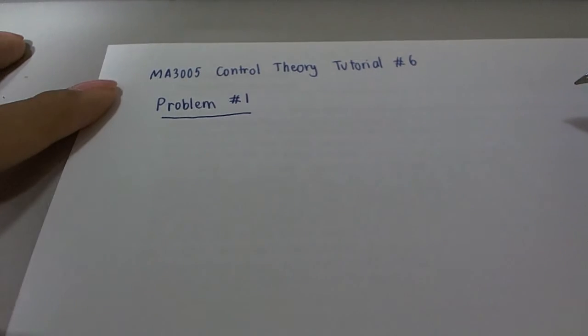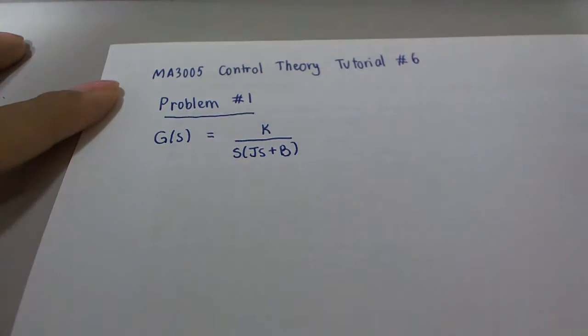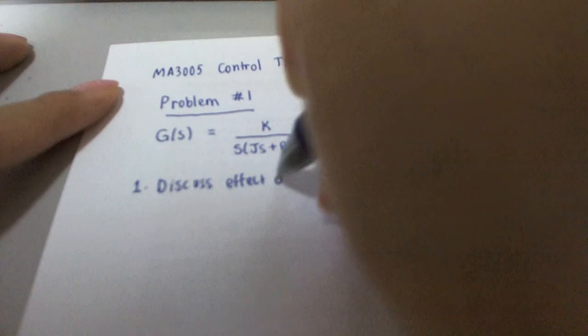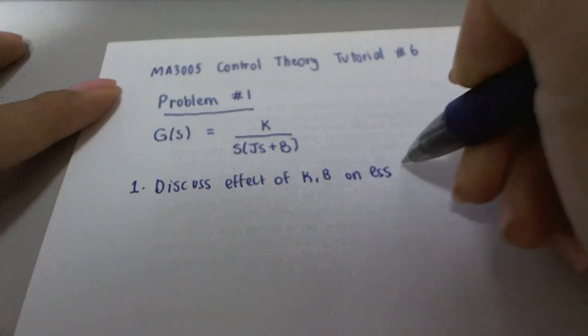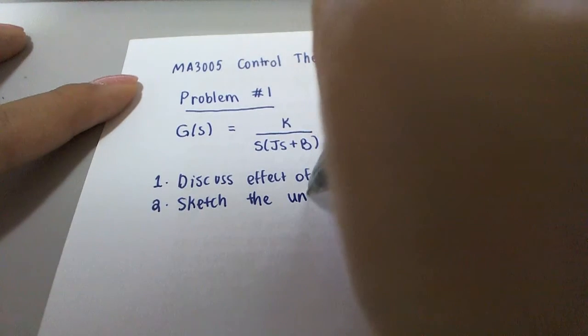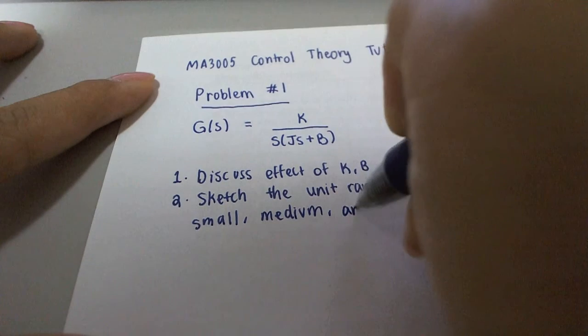In Problem 1, we are given an open loop transfer function G(s) equals k over s multiplied by (js + b). There are two objectives: first, discuss the effect of k and b on steady state error for a unit ramp input, where the input is given as 1 over s squared. Second, sketch the unit ramp response for small, medium, and large k.